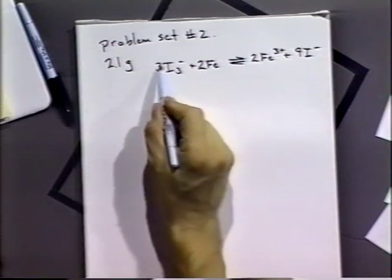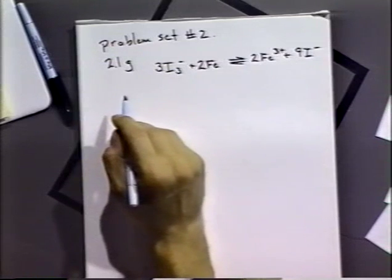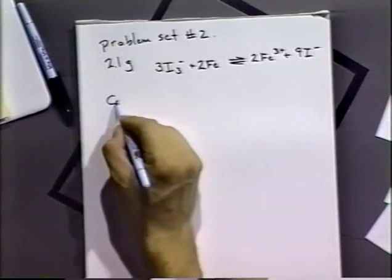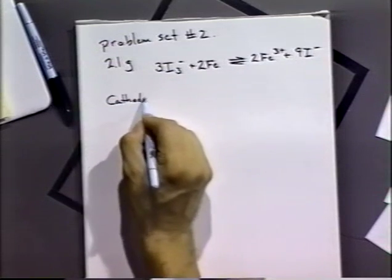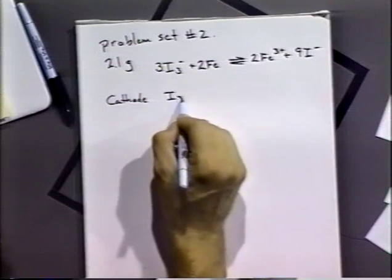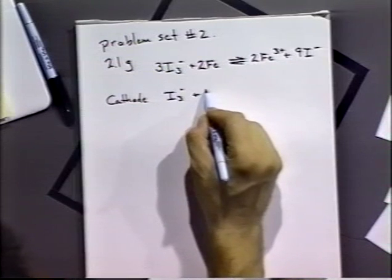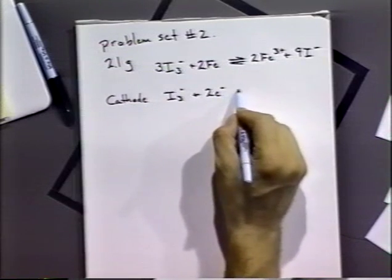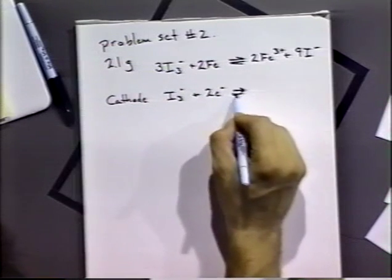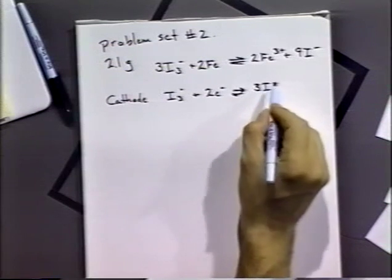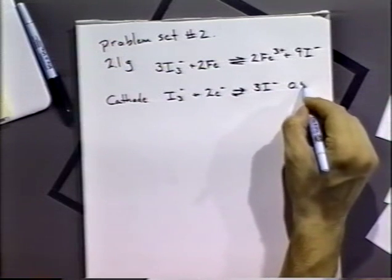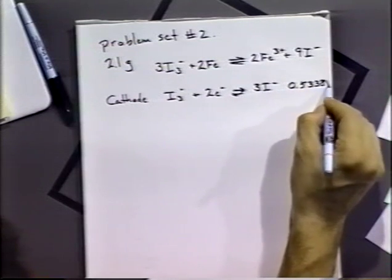Basically, it's simple enough. We see that the triiodide is being reduced. And so we can write a cathode half reaction that is involved in that. We can look that up in the back of the book. And we see that there's a reaction for I3 minus plus two electrons going to three iodide molecules. And that's 0.5338 volts.